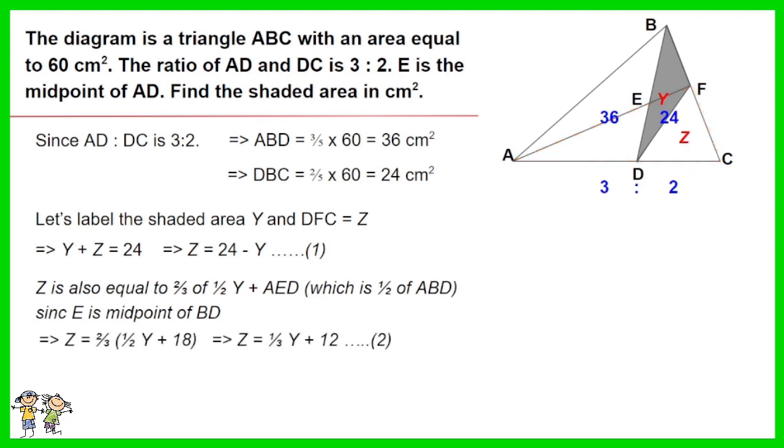As such, Z equals two-thirds times (half Y plus 18). Simplifying, Z equals one-third Y plus 12. This is equation 2. Combining equations 1 and 2: 24 minus Y equals one-third Y plus 12. Solving this, Y equals 9 cm².